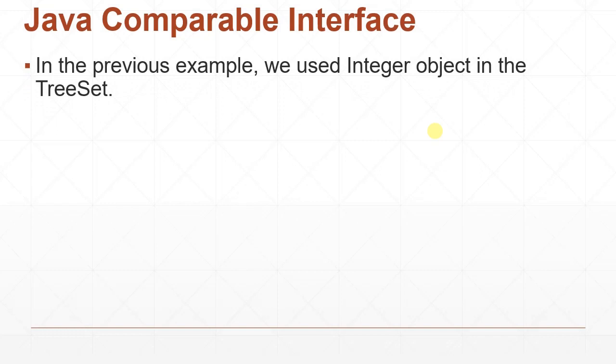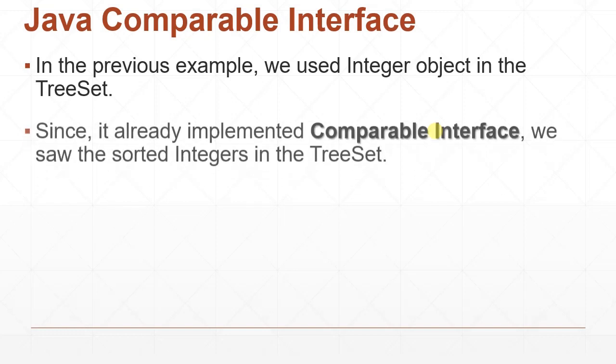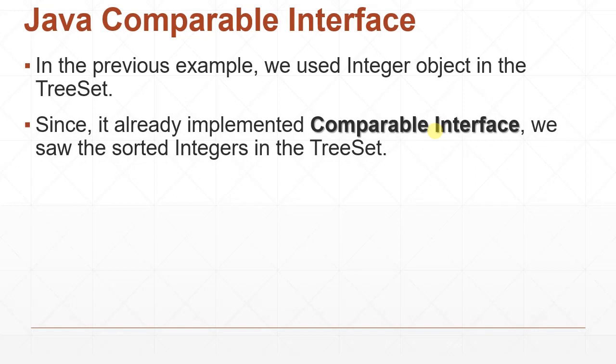In the previous example we used the Integer object in the TreeSet. We saw how to add integer elements to the TreeSet and how the integers are automatically sorted regardless of the insertion order using the add method. Since Integer already implemented the Comparable interface, we saw the sorted integers in the TreeSet, because the Integer is a Java class and the Java SDK already implemented the Comparable interface for it.